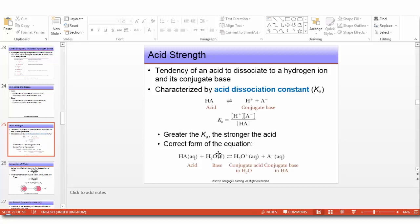What about acid strength? The tendency of an acid to dissociate to a hydrogen ion and its conjugate base is characterized by the acid dissociation constant, or Ka. The greater the value of Ka, the stronger is the acid. This is the correct form of the equation - we always neglect water for simplification, but water must be there. This is called the hydronium ion, but for simplicity we put it as H+, which is a proton.